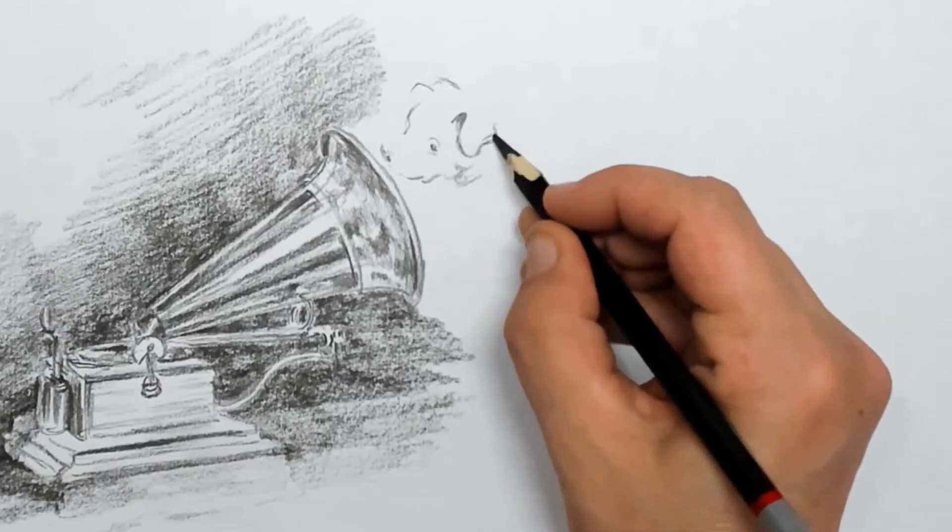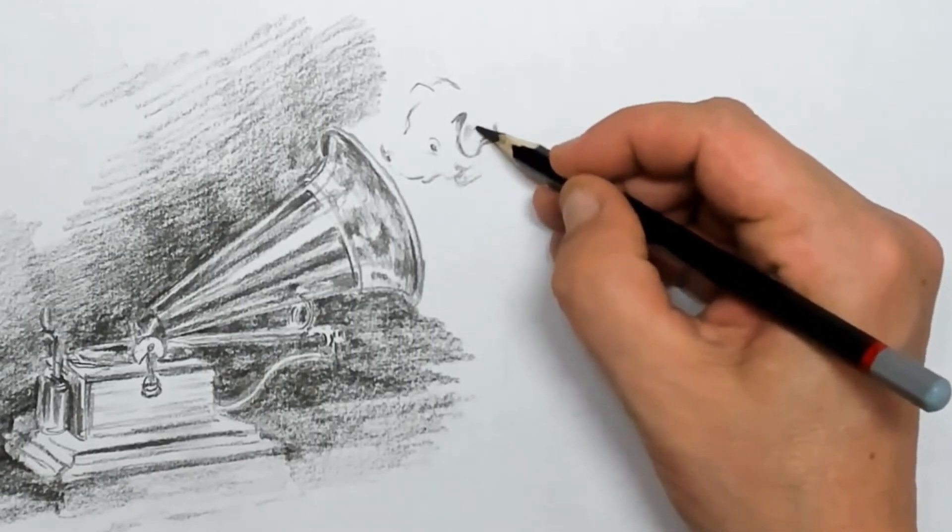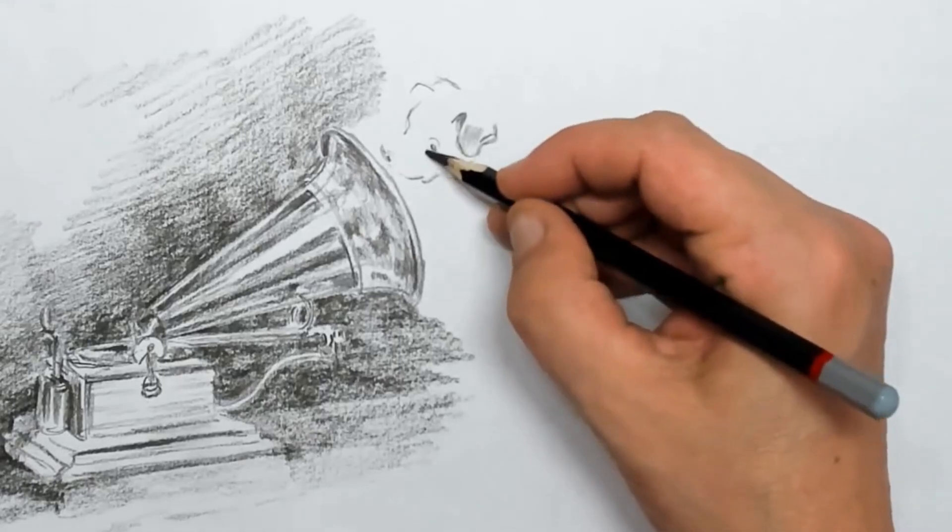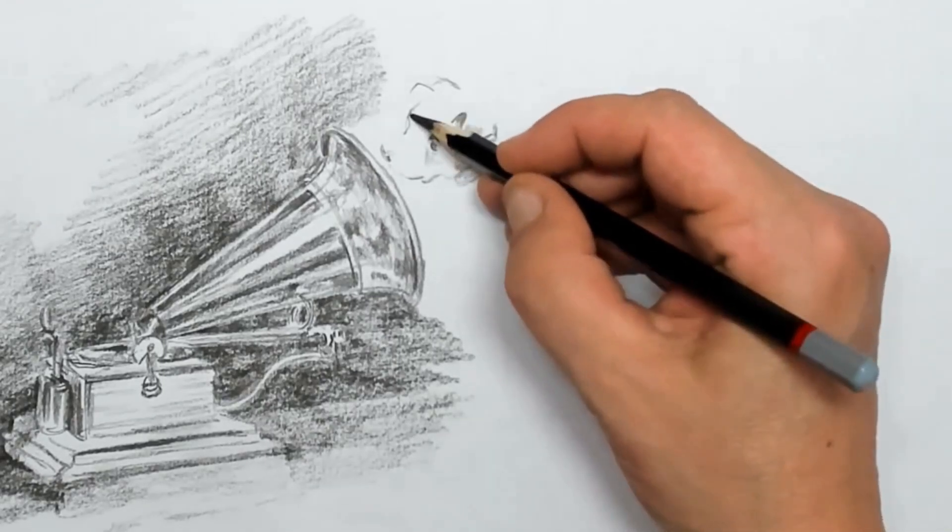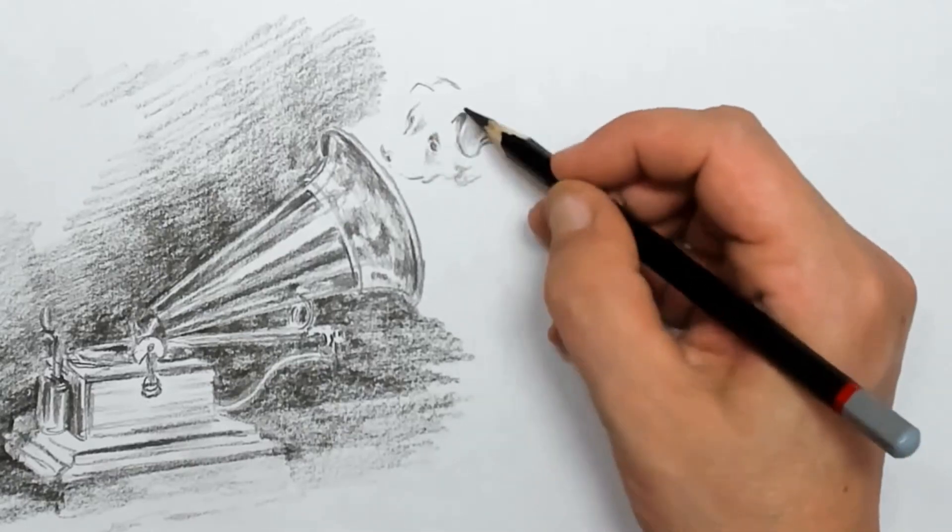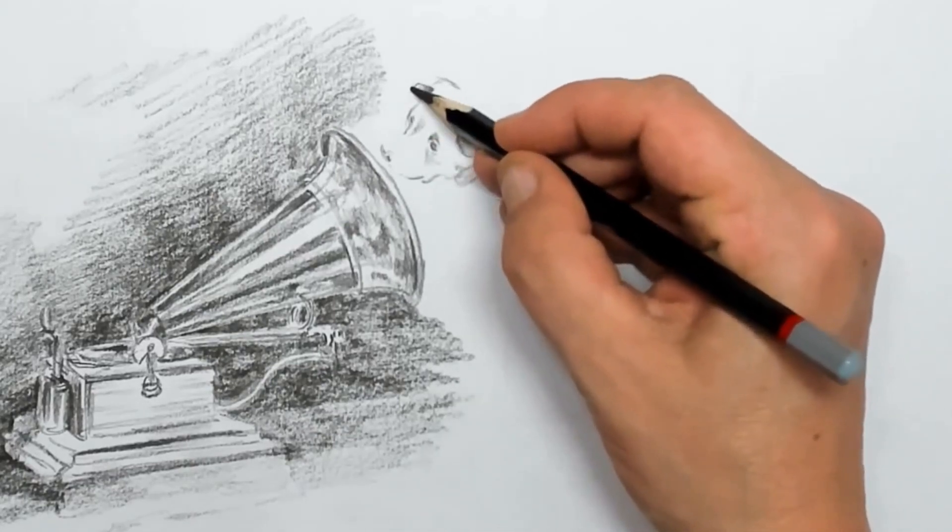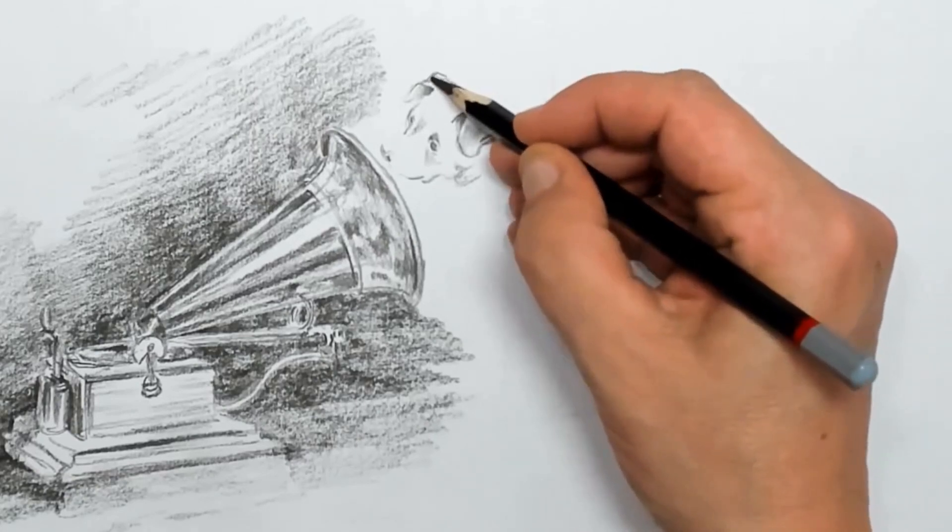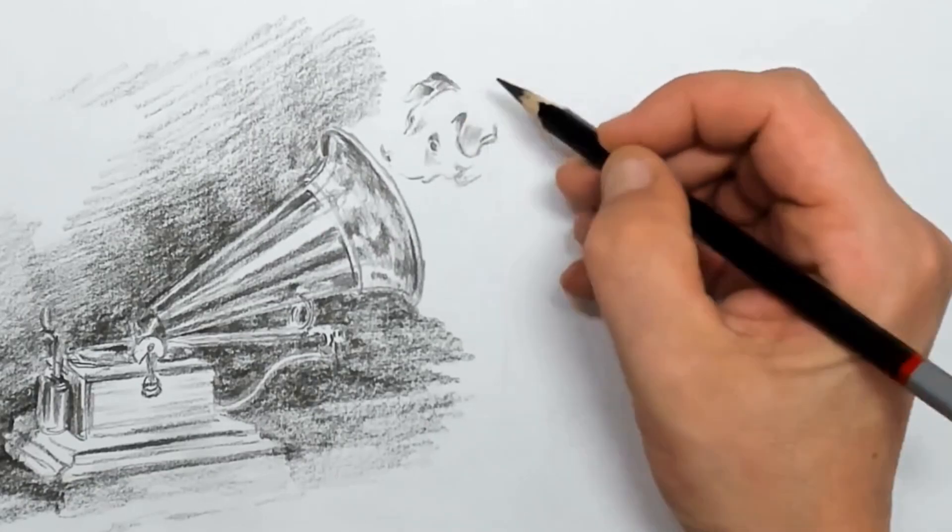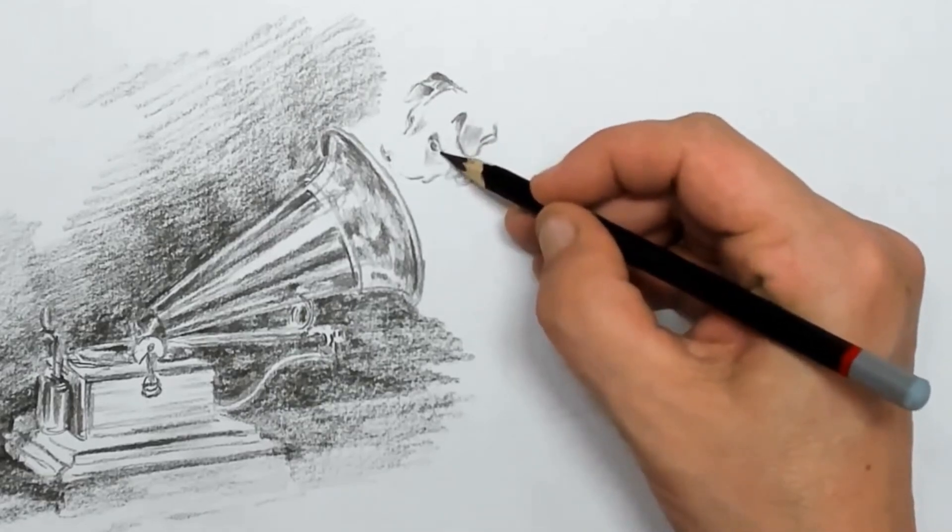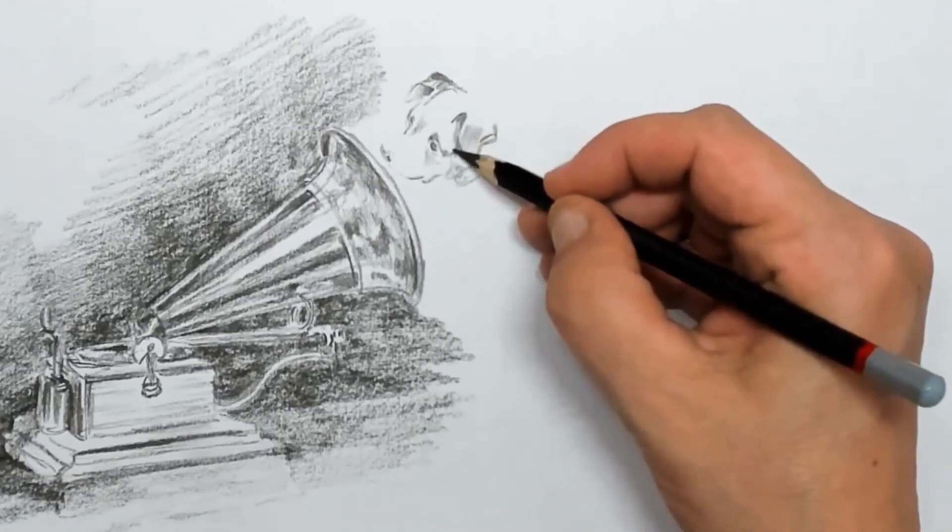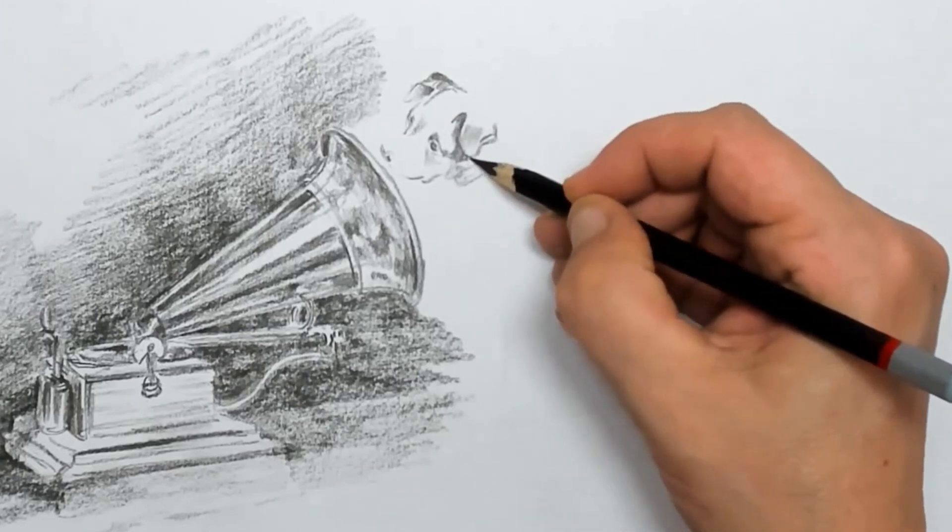That tilted head is very important for the drawing itself because that's what it's all about. He listens to his master's voice. As you can see, the eye, the nose, and his left ear are somewhat on one line, and that is what gives that head the tilt.